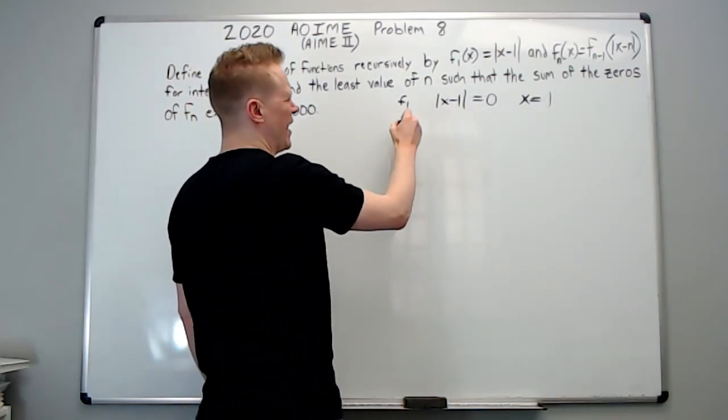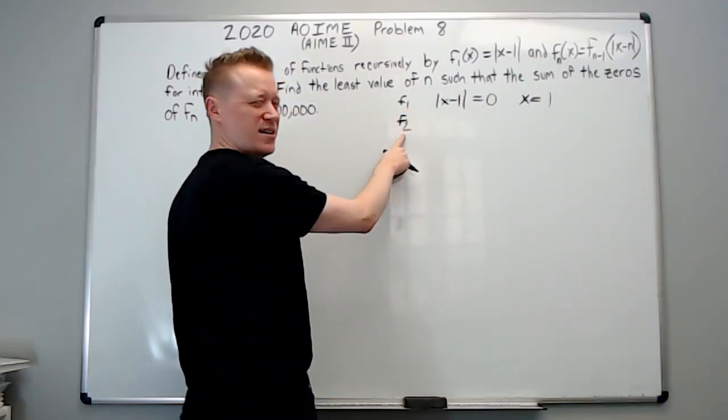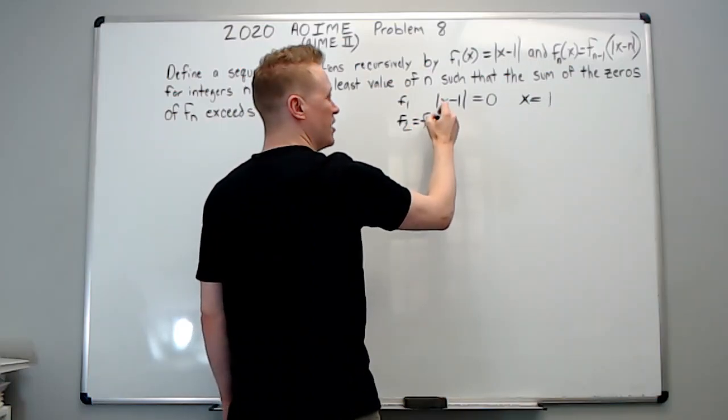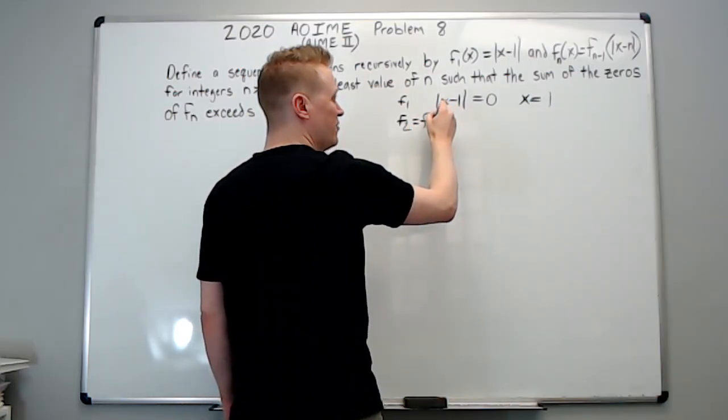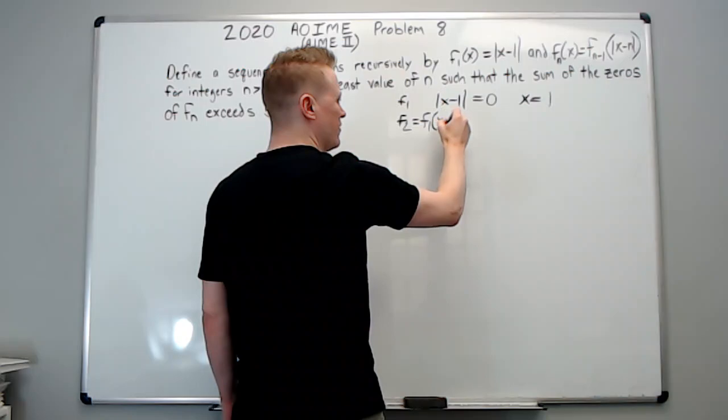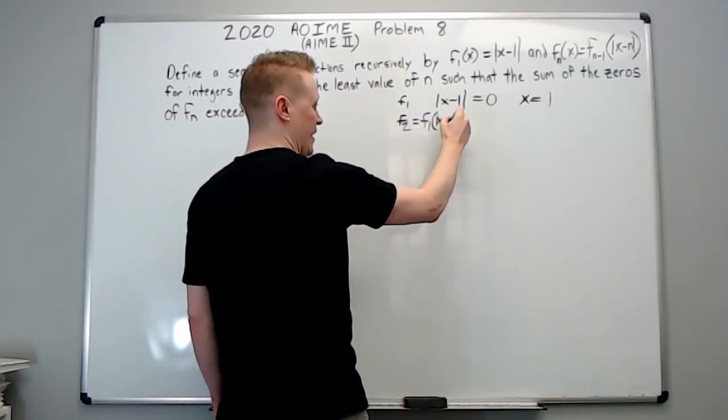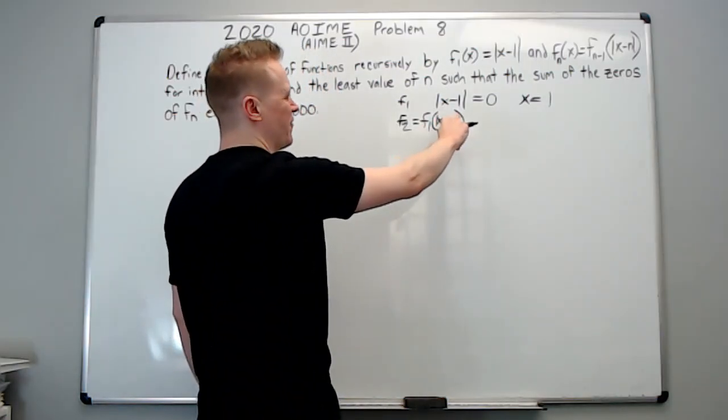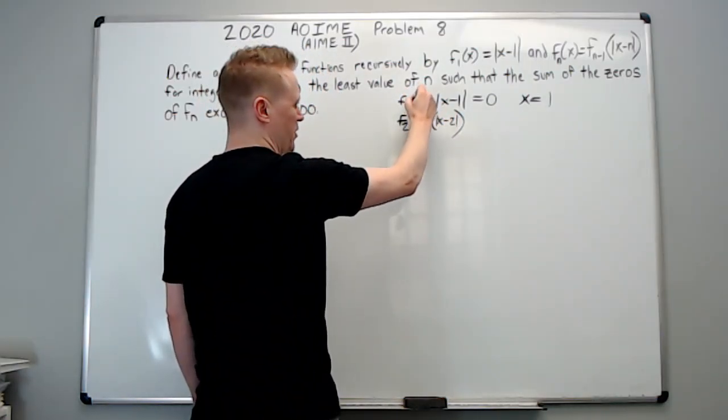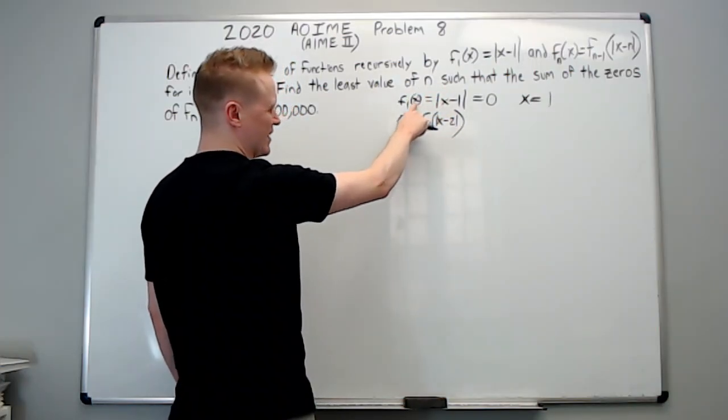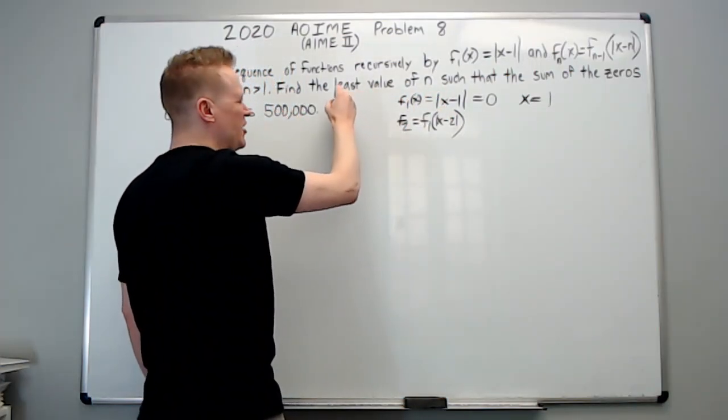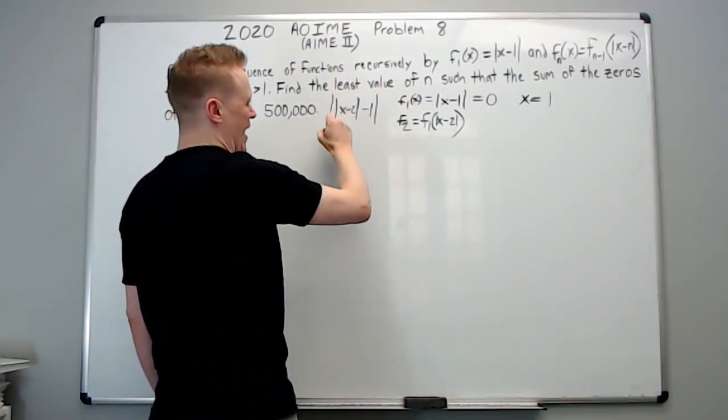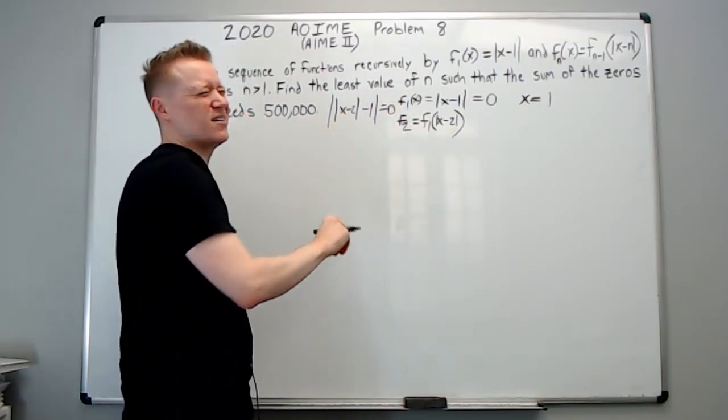So if I set X minus one equal to zero, the only value that makes that work is one. So X has to equal one. So this is for F_1. Also, notice I'm not writing of X and things like that. You want to have less and less notation as you advance through a problem, because as long as it makes sense to you, that's all that matters. So what about F sub two of X? How do we understand what this is? Well, we're going to plug the two into N, which means it's equal to F sub one of the absolute value of X minus the N, which in this case is two still.